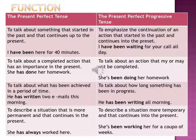Present Perfect Progressive Tense is used to refer to an action that started in the past and is still continuing — it has not yet finished. This tense is used to emphasize the continuation of an action that started in the past and continues to the present. For example: 'I have been waiting for your call all day' — and even now, I am still waiting. Kindly read all the examples to understand the difference between these two tenses.